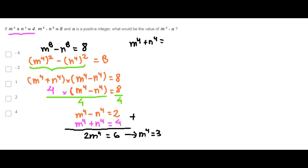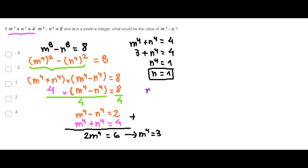Since m to the 4th power is 3, then n to the 4th power must be 1. Therefore, n is 1. Finally, the value of m to the 4th power minus n must be 3 minus 1, which is 2. Choice D is correct.